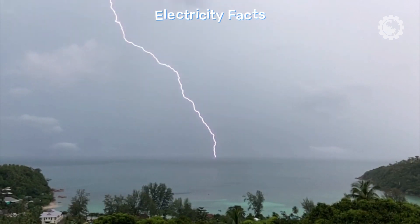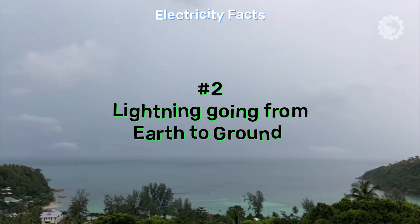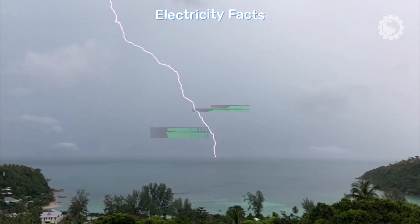Lightning is amazing, and it has a surprising secret. When lightning happens, it goes from the clouds to the earth. But what we see is really the electricity going back up from the ground to the clouds. It's like nature's own power show.